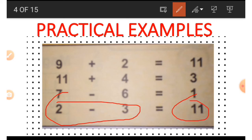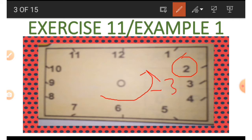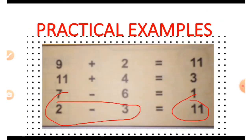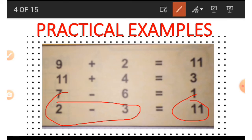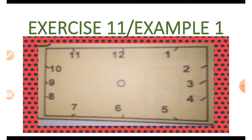How could 2 minus 3 give us 11? We use the face of the clock. With 2 as the first number, we move three steps backwards — anti-clockwise — and count: 1, 12, and 11. That is how we got 11. Adding and subtracting using the analog clock face is so much fun! Now let's look at another example.